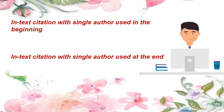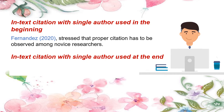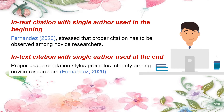For in-text citation with a single author used at the beginning, here's the example: Fernandez (2020) stressed that proper citation has to be observed among novice researchers. For in-text citation with a single author used at the end, here's the example: Proper usage of citation styles promotes integrity among novice researchers (Fernandez, 2020).